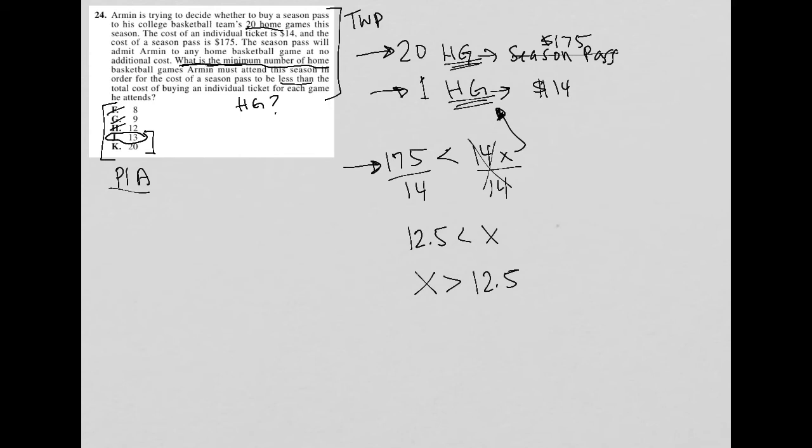For instance, for choice F, if there were 8 home games, we know that for individual tickets he'd be paying 8 times 14. We know that 8 times 14 is 112. If he only attended 8 home games after buying a season pass, then he's wasted some money. He should have instead paid for individual tickets.